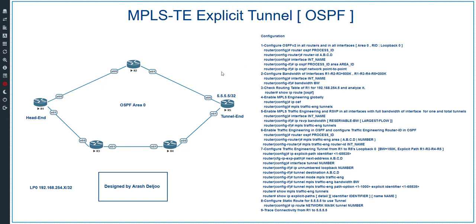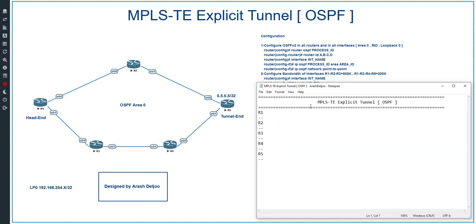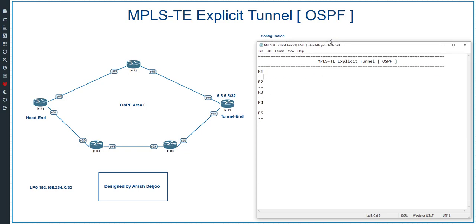In this scenario, I am going to configure from scratch, so we need to configure everything. In some scenarios, we will use the configuration of the previous scenario and only make some changes. Here we have a notepad file and I am going to configure the scenario with it. We have R1, R2, R3, R4, and R5. The first thing to configure is the IP addressing.